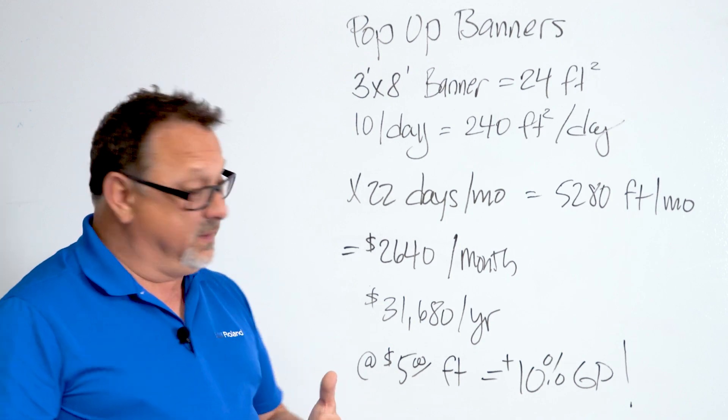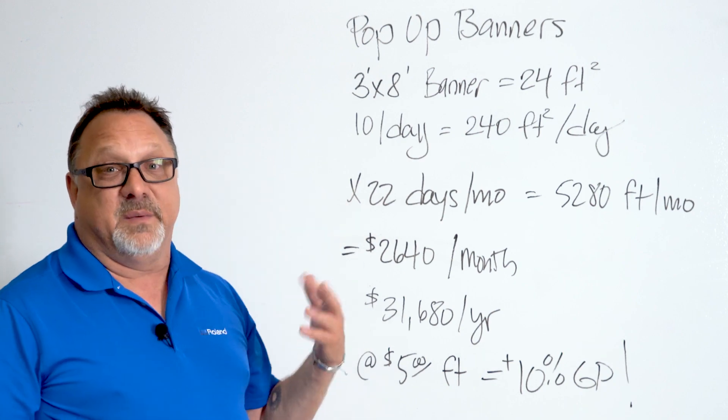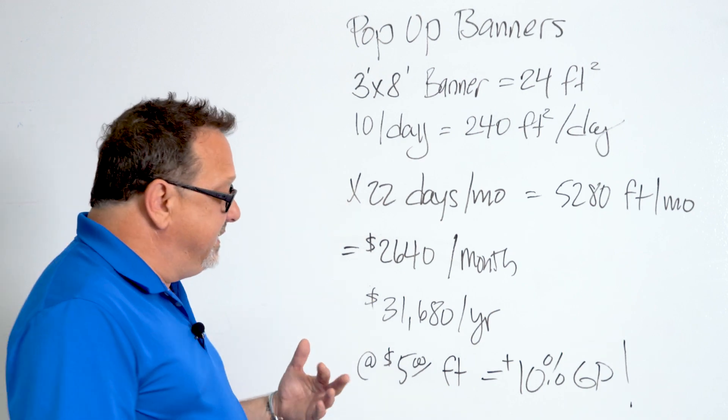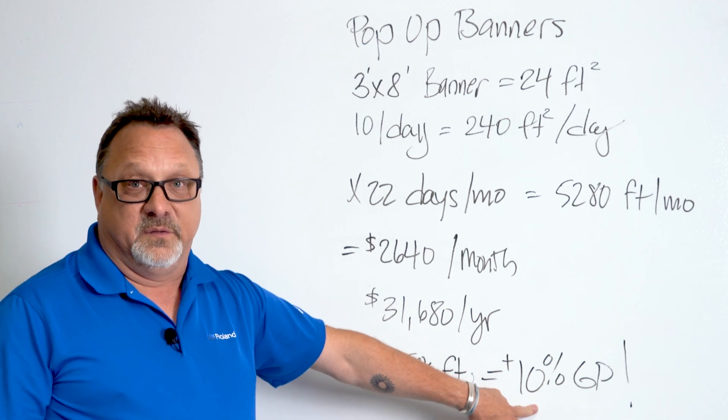Over the course of a year, that's $31,680. And at an average of about $5 a square foot at retail, that's a 10% improvement in gross profit for the business.